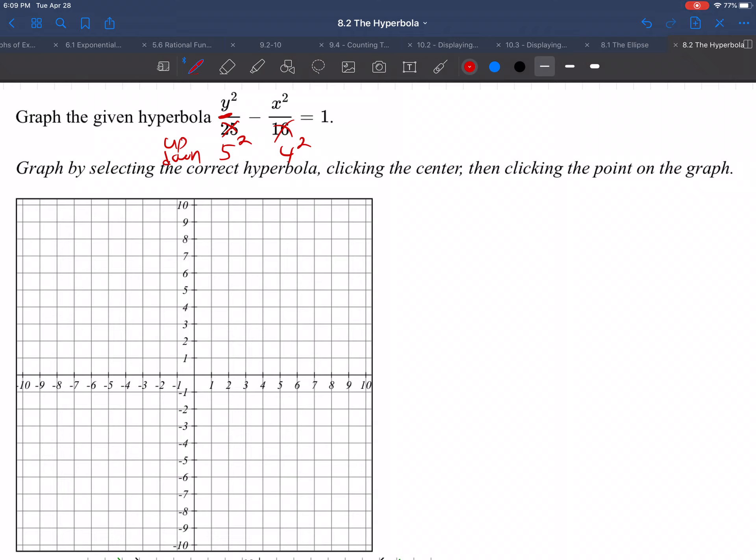So starting from the origin, go up 5 and down 5. And then whatever's underneath x, that's always got to be right-left because the x-axis goes right and left. So right and left 4. So far, this is just like an ellipse.